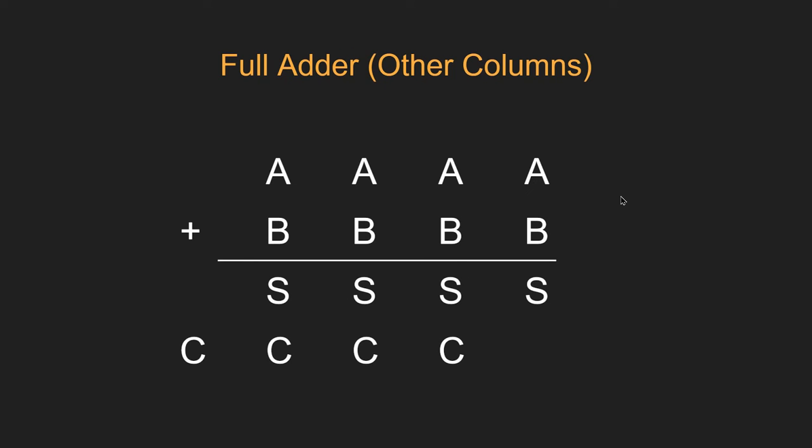Now, to make things a little bit easier in our diagrams, because we've got lots of A's, B's, S's and C's, we will label them from the right to the left, showing where it begins and goes through. So, we've got A1, B1, S1, C1,